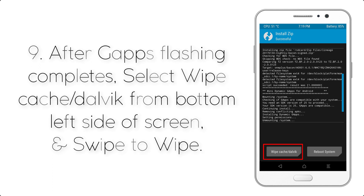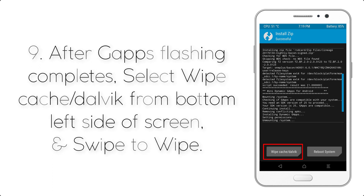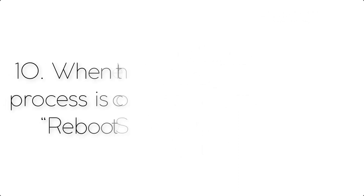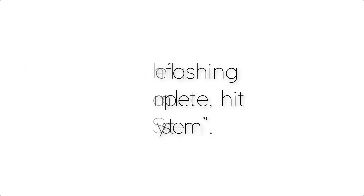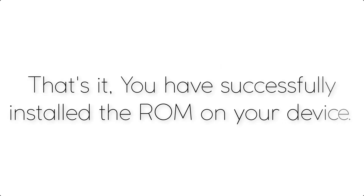Step 8: Flash the GApps zip package in the same manner. Step 9: After GApps flashing completes, select Wipe Cache and Dalvik from the bottom left side of the screen and swipe to wipe. Step 10: When the flashing process is complete, hit Reboot System. That's it — you have successfully installed the ROM on your device.